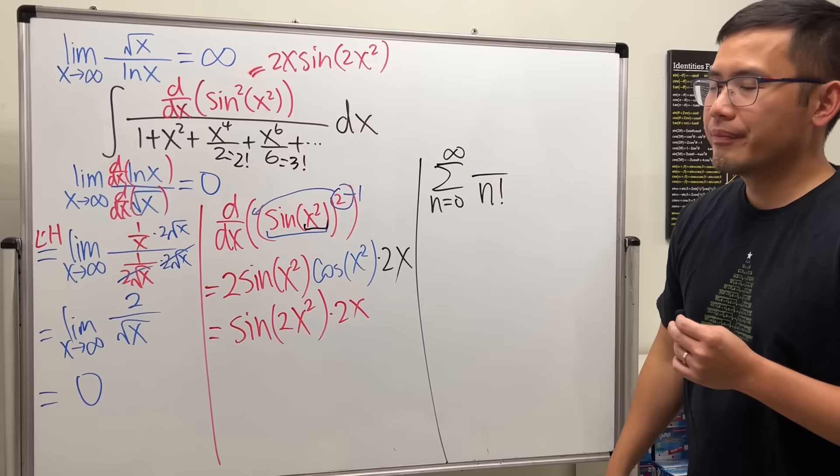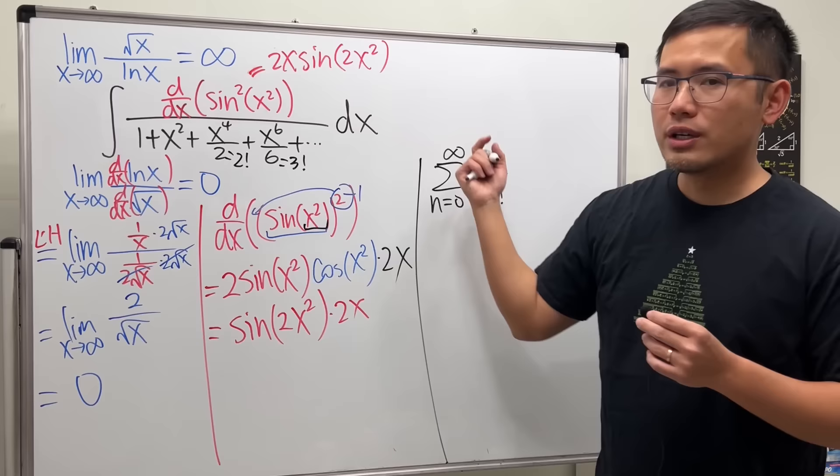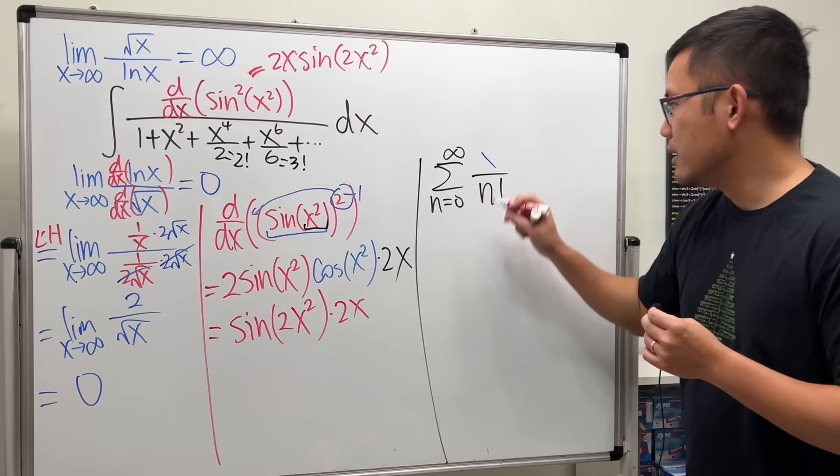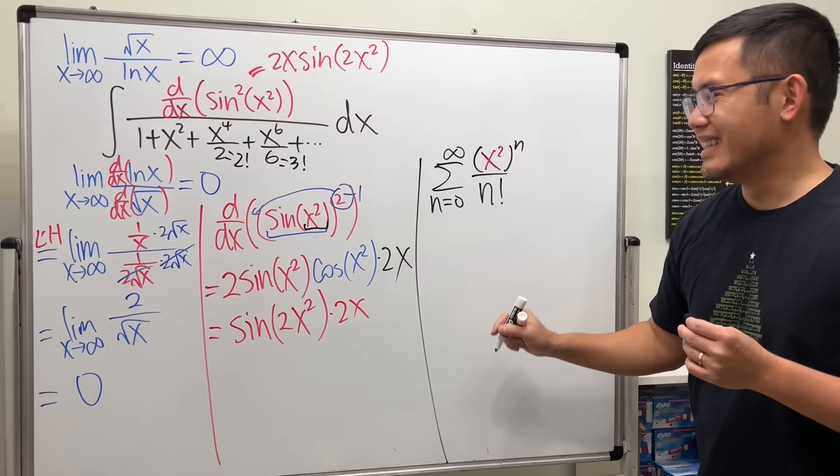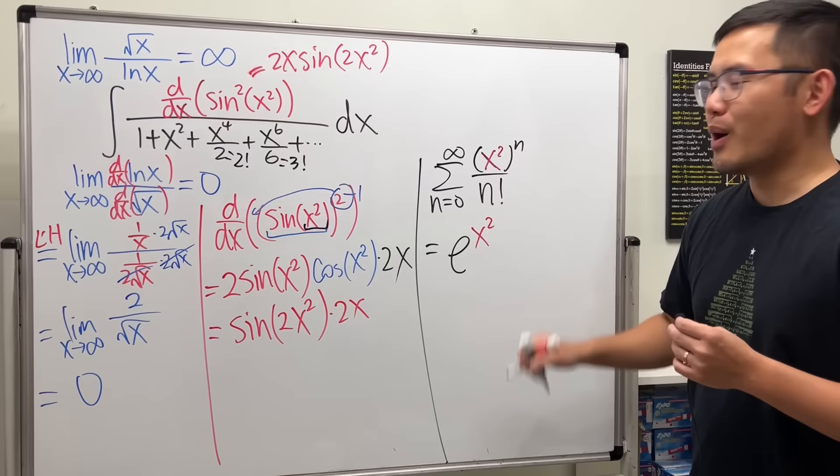On the top we have 2, 4, 6 and so on — all the even numbers — which we can express as (x²)^n. Do you recognize what this function is? Yes, this is just e^(x²). So the denominator of our expression is simply e^(x²).